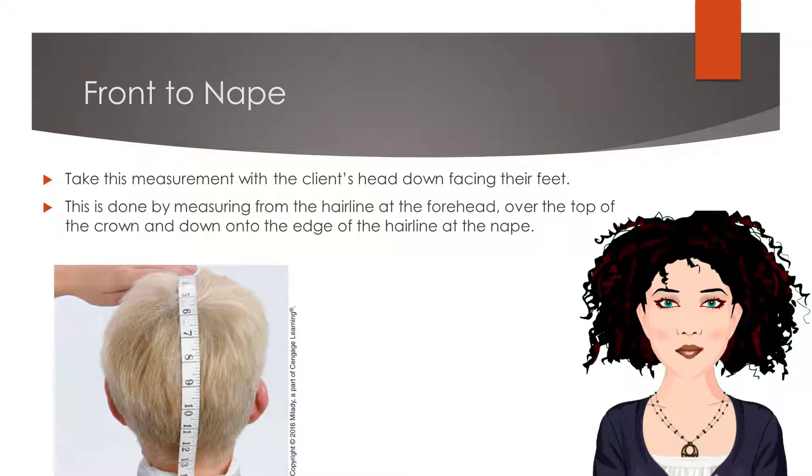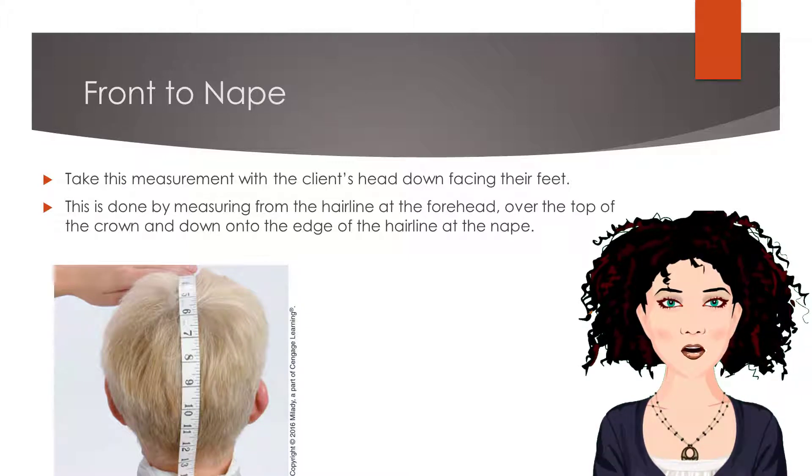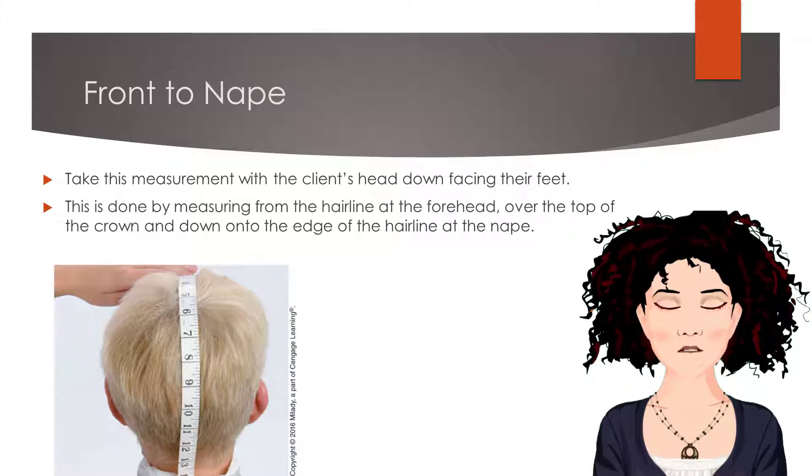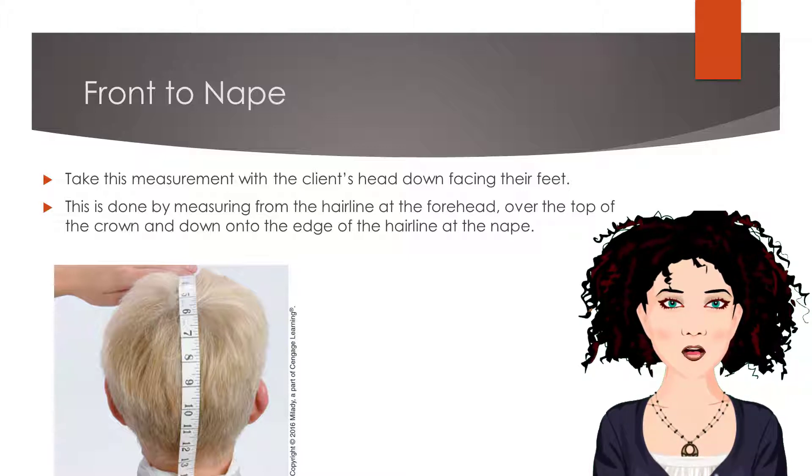When measuring the front to nape, take this measurement with the client's head down facing their feet. Measure from the center front hairline at the forehead, over the top of the crown, and down to the center of the hairline at the nape. Write this number down in inches or the preferred unit of measurement.